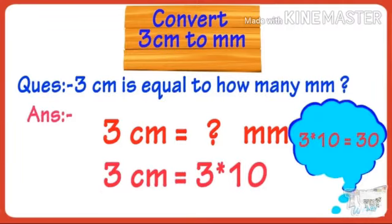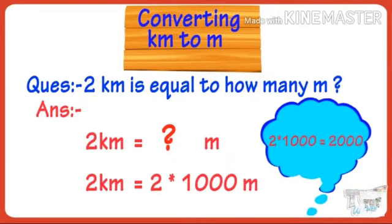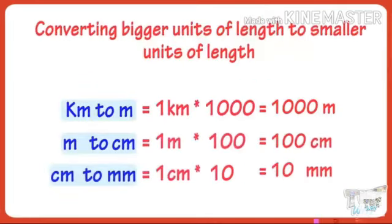3 centimeters multiplied by 10 equals 30 millimeters. Now, 2 kilometers into meters: 2 multiplied by 1000 equals 2000 meters. To summarize: kilometer to meter, multiply by 1000; meter to centimeter, multiply by 100; centimeter to millimeter, multiply by 10.